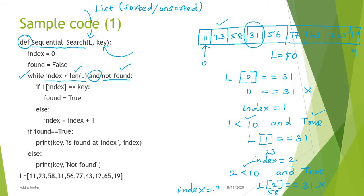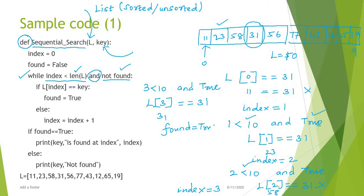Now index is 3. While loop: 3 is less than 10 — true. I check l[3] which is 31 double equal to 31 — that is true! So found is updated to true. It won't go to the else part. The while loop runs again: index is still 3, so 3 less than 10 is true, but 'not found' is now false. The condition fails, so it comes out of the while loop.